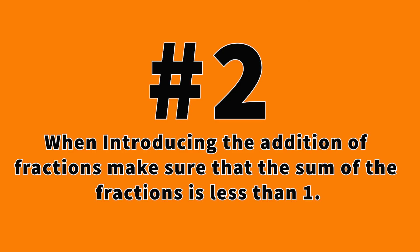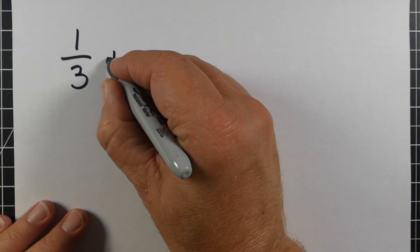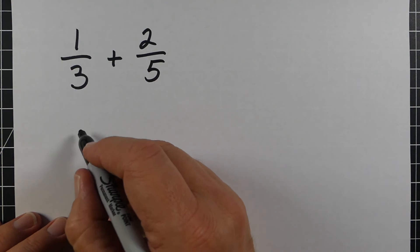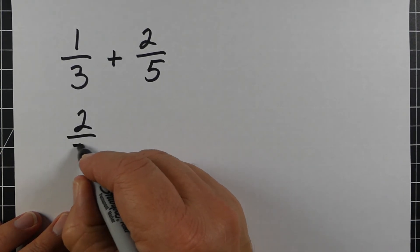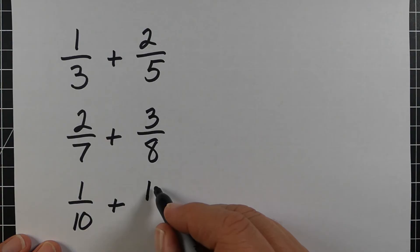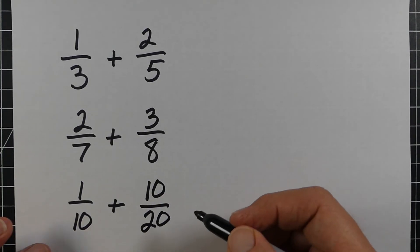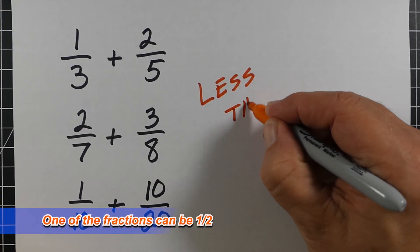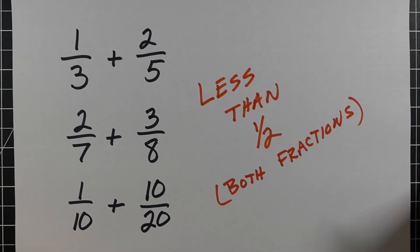The second tip: make sure the two fractions you're adding sum to less than 1. You may want to make sure both of them are 1/2 or less. For example, 1/3 plus 2/5, or 2/7 plus 3/8, or 1/10 plus 10/20 — knowing they're each less than 1/2 means the result will be less than 1, which will be a lot easier for the students.